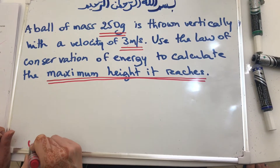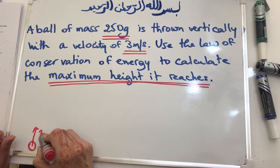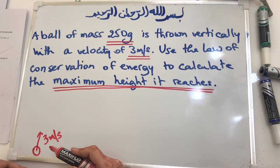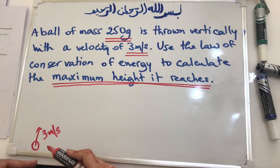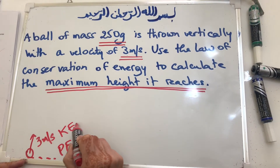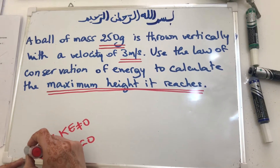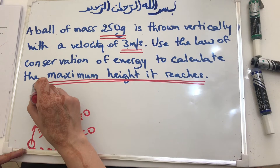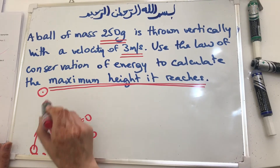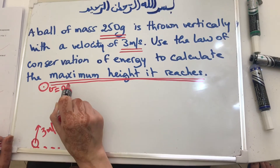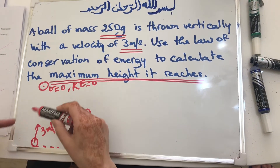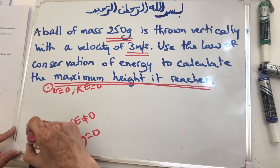So I have a ball here and I throw it with 3 meters per second. At the beginning, at the bottom, does it have any gravitational potential energy? No. So here, PEG is zero and kinetic energy is different from zero. Then this ball will convert that kinetic energy to potential energy until it reaches the maximum height. At this height, it stops and then falls back. So at maximum height, V would be zero, so kinetic energy would be zero, and all that kinetic energy was converted into potential energy.